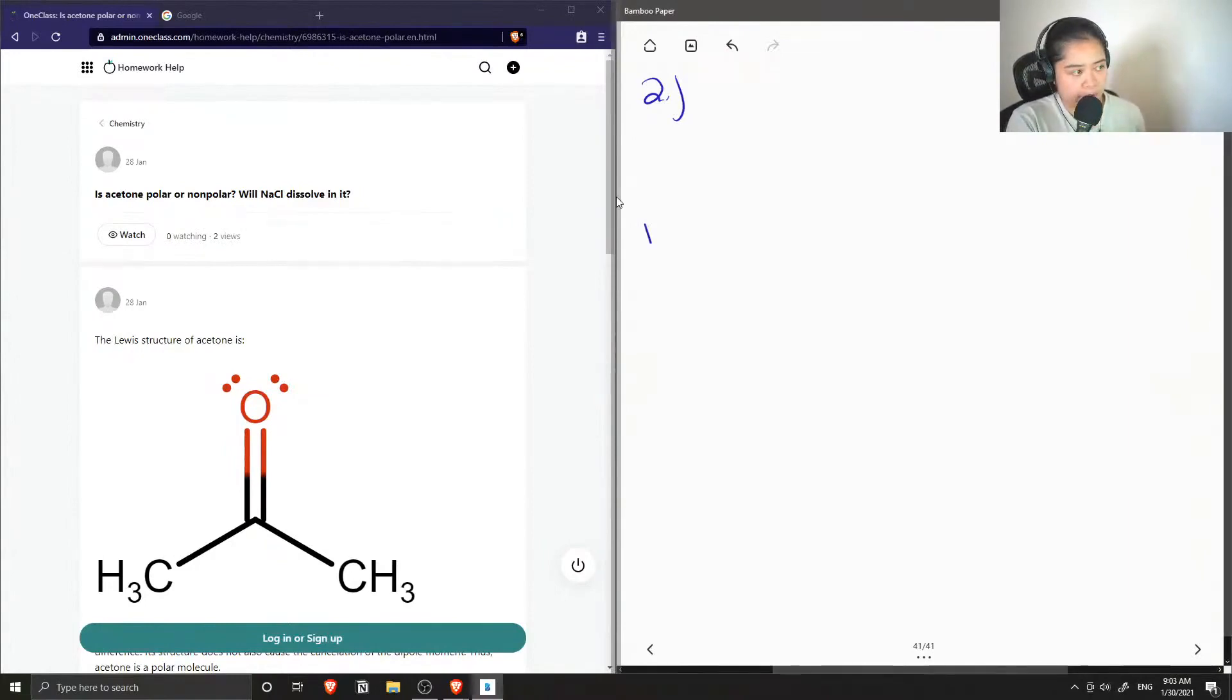We have the Lewis structure of acetone, which can also be known as propanone. It's a three-carbon chain with a ketone on our second carbon, and we get something like this.